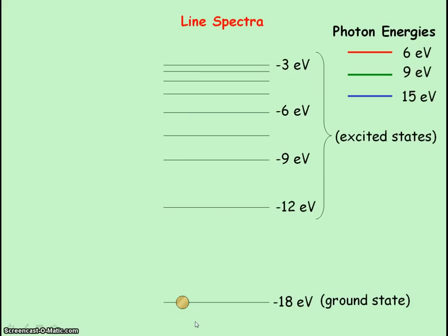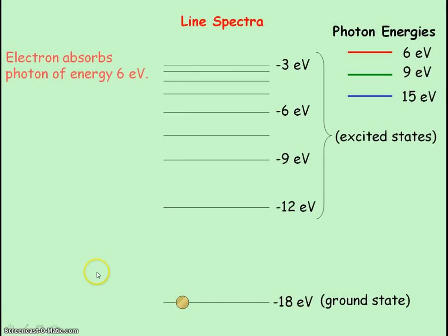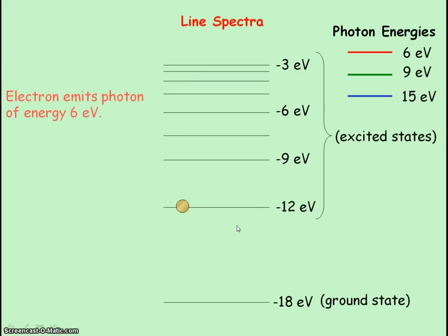This diagram shows the energy levels for a certain atom. An electron in its lowest energy level — the ground state — has an energy of minus 18 electron volts. Energy levels have negative values, indicating that electrons are bound inside the atom. If the electron absorbs a photon of 6 eV, it gains 6 eV of energy and is excited to the minus 12 eV energy level. The difference between these energy levels is 6 eV. It can then emit a photon of 6 eV, losing 6 eV of energy as it returns to the ground state.